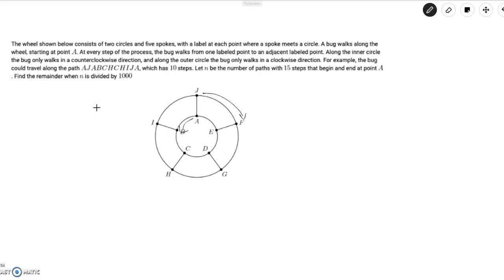the wheel shown below consists of two circles and five spokes, the label at each point where a spoke leads the circle. A bug walks along the wheel, starting at point A. At every step of the process, the bug walks from one labeled point to an adjacent label point. Along the inner circle, the bug only walks in a counterclockwise direction, and along the outer circle, the bug only walks in a clockwise direction. For example,